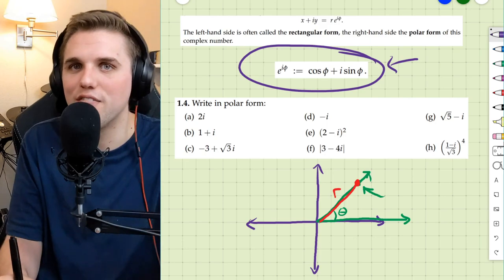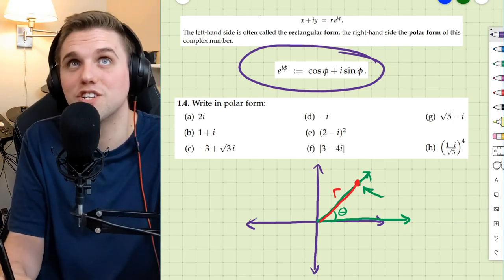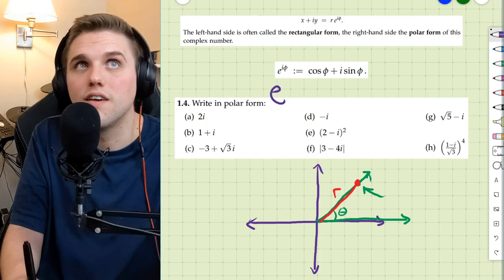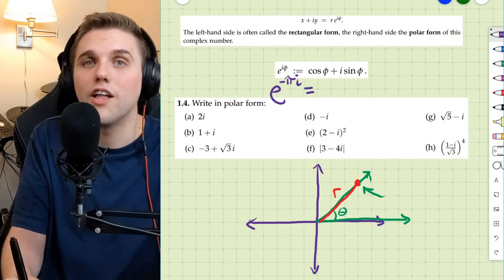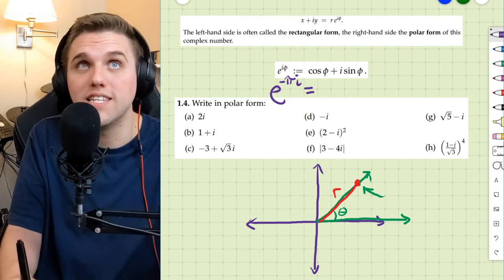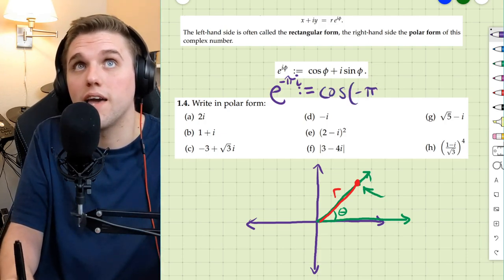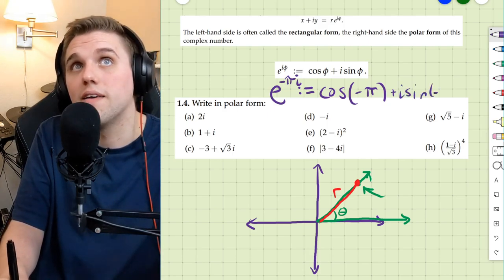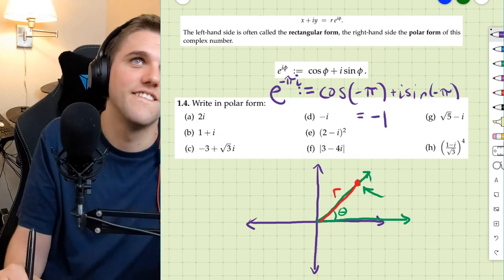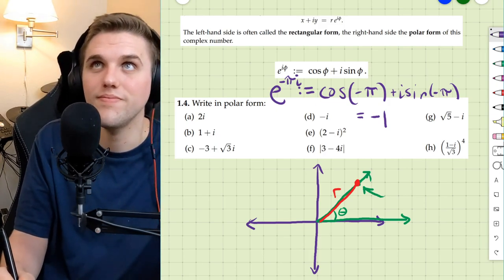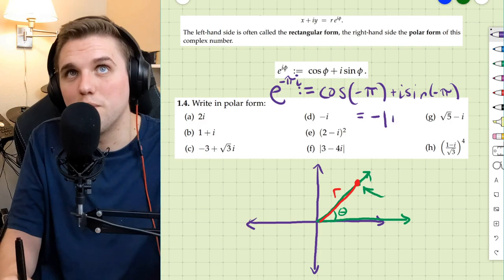This is a definition. To make things simple: by definition, e^(iθ) is defined to be cosine θ plus i·sine θ. So e^(-πi) is defined to be cosine(-π) plus i·sine(-π), which is just negative one, or negative one plus zero·i.